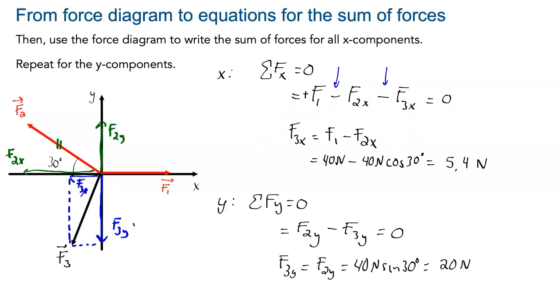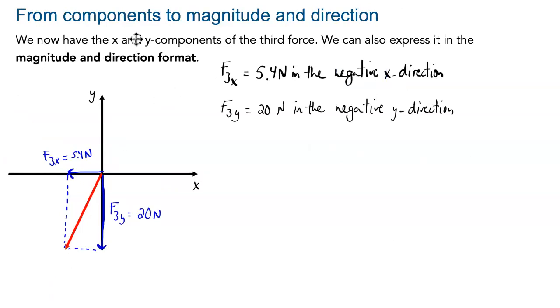So we now have the components of our vector F3. So F3x is equal to 5.4 newtons in the negative x direction, which we can if we want to just rewrite as minus 5.4 newtons. And we have F3y, which is equal to 20 newtons in the negative y direction, which we could also write as minus 20 newtons on the y-axis.